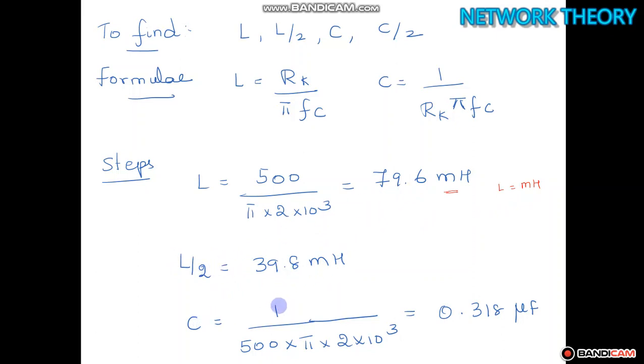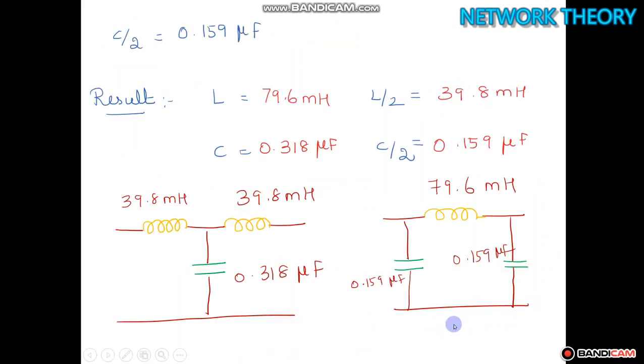And C is equal to 1 by RK pi FC. So 500 into pi into pi into 2 into 10 power 3. Capacitance in terms of microfarads or nanofarads. So C is equal to 0.318 microfarad. From this find out C by 2. So C by 2 is equal to 0.159 microfarad.